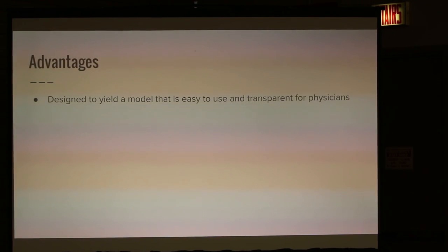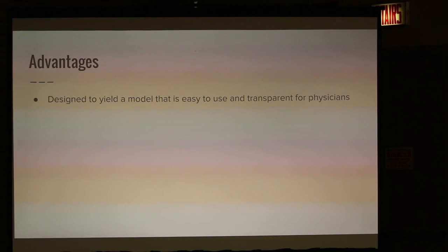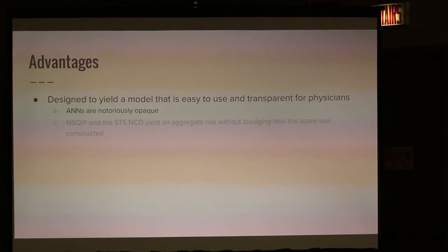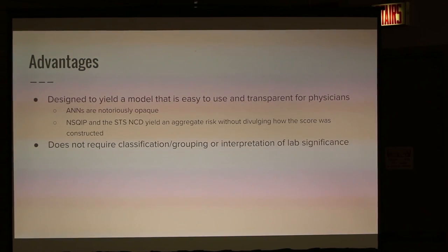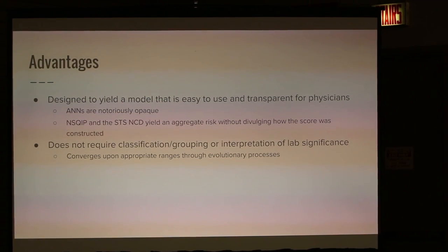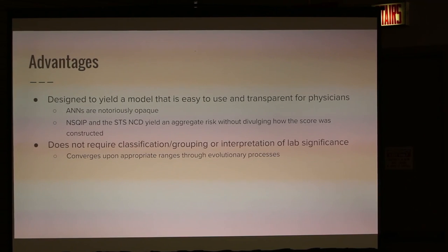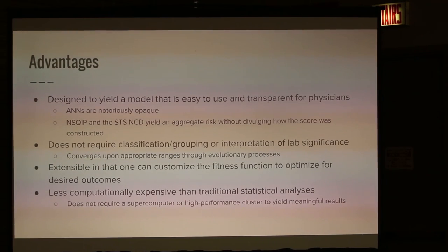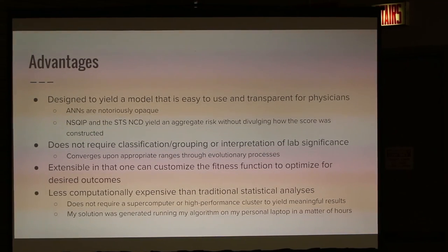Discussing advantages: this was designed to yield a model that is easy to use and transparent for physicians. The interpretation strategies were designed to be something a physician could apply in clinic without plugging numbers into a model. It does not require classification or grouping of lab significance — it naturally converged upon appropriate ranges through evolutionary processes. This was quite remarkable: in some trees featuring hemoglobin, it immediately figured out what anemia was without being told. And it's extensible and less computationally expensive — I ran this algorithm on my laptop for several hours. Thank you very much.